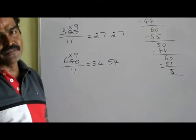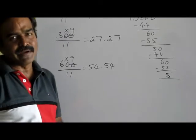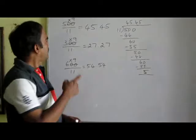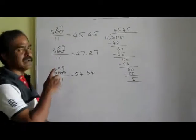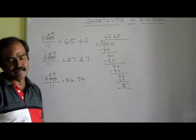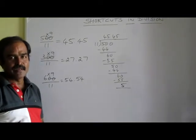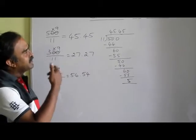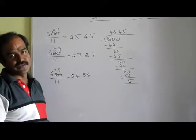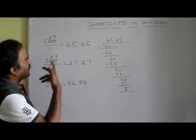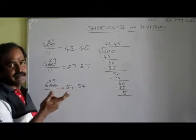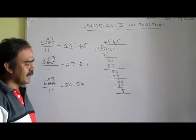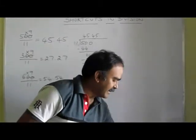Two things that may come to mind: instead of dividing by 11, I am multiplying by 9. Is that okay? Yes. Because what we are doing in shortcuts is, instead of dividing by 11, you can multiply by 9.